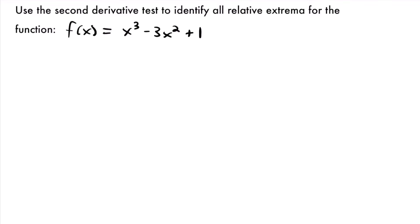Here we have an example — we want to use the second derivative test to identify all relative extrema for f(x) = x³ - 3x² + 1. Just like the first derivative test, the first thing you want to do for the second derivative test is to find your critical values where the first derivative is equal to zero. Even though this is the second derivative test, we still need to use the first derivative to find our critical values. Do not set your second derivative equal to zero — that's how you find inflection points which deals with concavity. We are looking for the points where the slope is zero, which are our critical values, and where relative extrema occur.